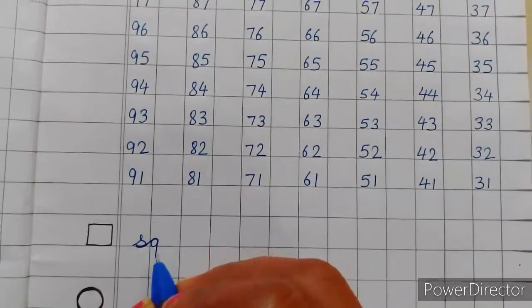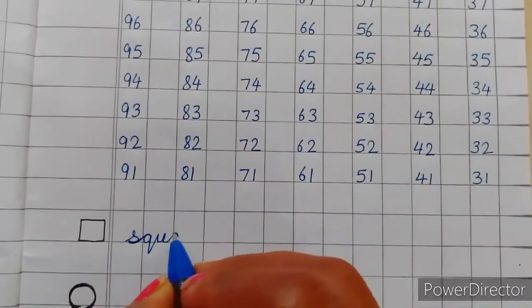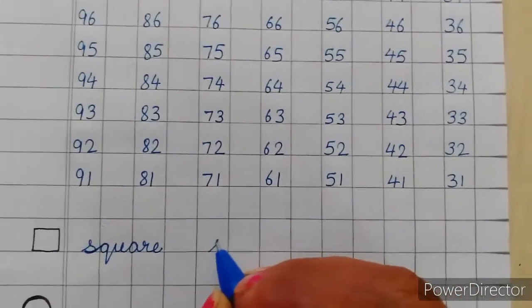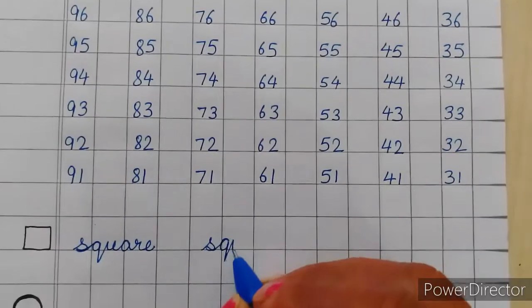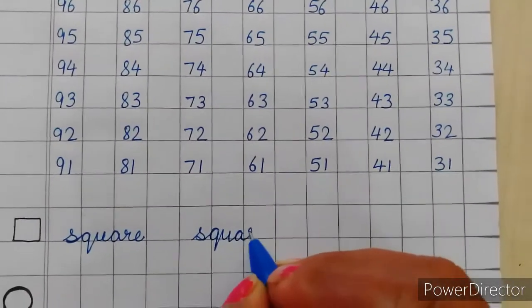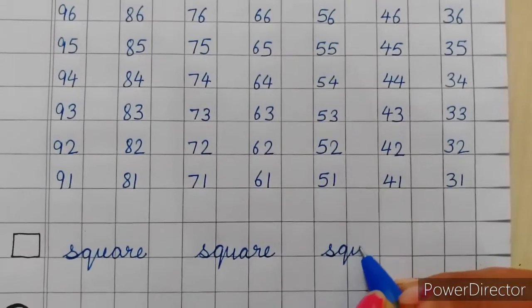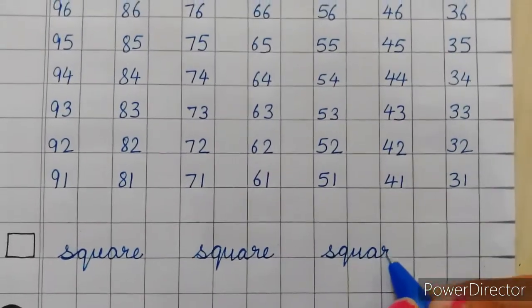We will revise the spelling of a square. S, Q, U, A, R, E, square. Leave one box. S, Q, U, A, R, E, square. S, Q, U, A, R, E, square.